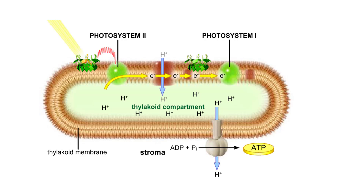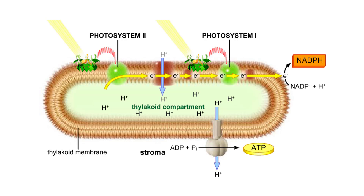Like Photosystem II, Photosystem I is activated by photon energy passed from adjacent light harvesting complexes. Electrons from Photosystem I pass to an intermediary molecule, then to NADP, which also picks up hydrogen ions to form NADPH.